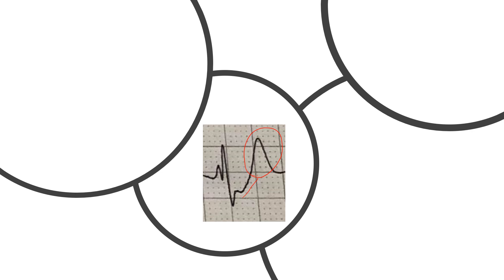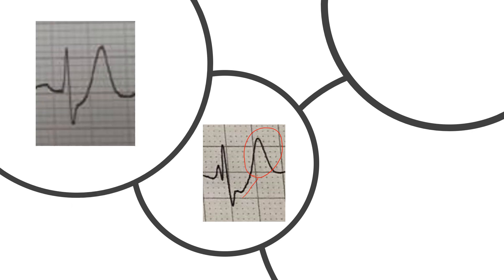This is the de Winter sign, and you have to know that it indicates a STEMI is coming. The de Winter sign is one of the pre-STEMI signs you must be aware of: ST depression upsloping followed by a tall symmetrical T wave.